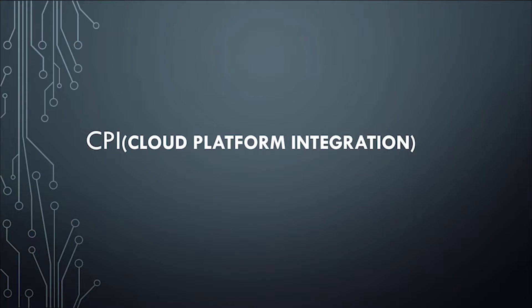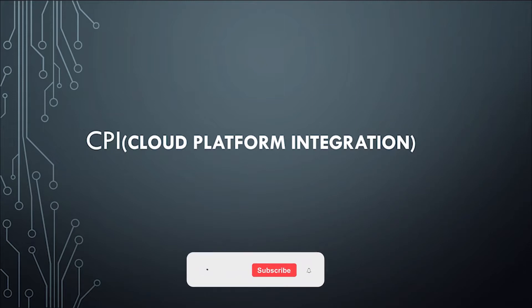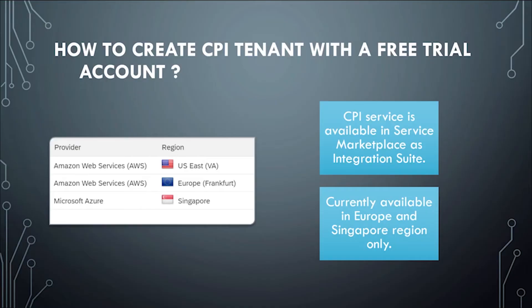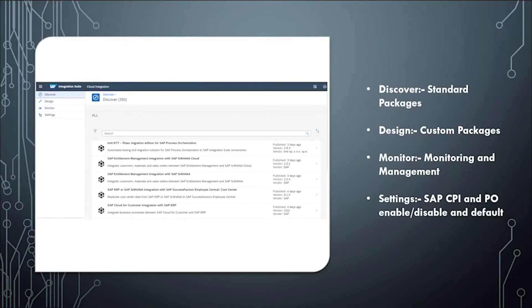Welcome back. Till now we have seen what CPI is and why we should choose it. We have also seen how to create an account on Business Technology Platform and how to configure a CPI tenant. Moving forward, we will see the main capabilities of CPI — we will take a tour of CPI and see the facilities: Discover, Design, Monitor, and Settings.